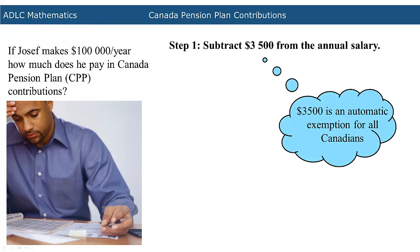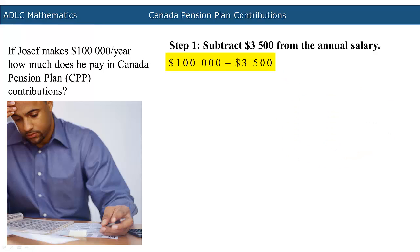Step 1 is to subtract $3,500 from the annual salary. $3,500 is an automatic exemption for all Canadians. In this problem, the annual salary is $100,000. When you subtract $3,500 from the annual salary of $100,000, you are left with $96,500.